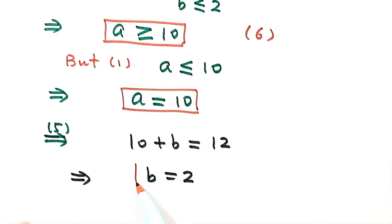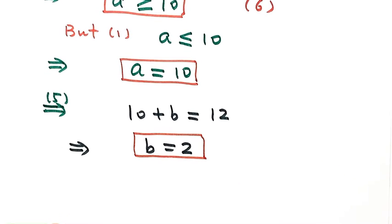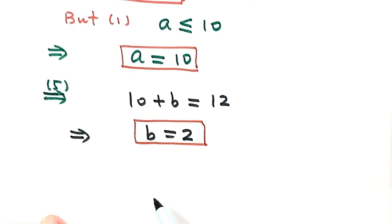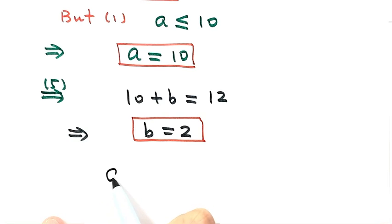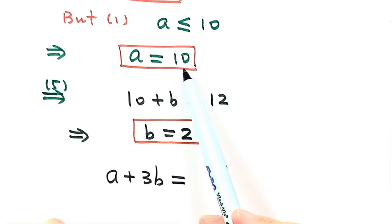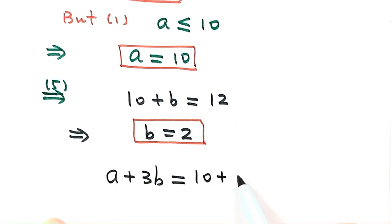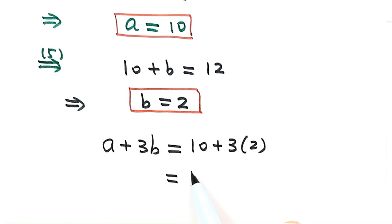Now we have solutions for both a and b. Looking at the original question, which asks for the value of 3a plus 3b: substituting a equals 10 and b equals 2 gives 3 times 10 plus 3 times 2, which simplifies to 30 plus 6. The answer is 16. Thanks for watching.